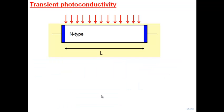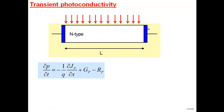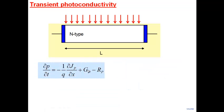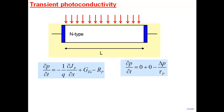After switching off the light, apply the continuity equation for transient photoconductivity: no current flowing (drift/diffusion term = 0), no generation (G_p = 0). The equation becomes: ∂(Δp)/∂t = −Δp/τ_p. Solution: Δp(t) = Δp₀ × exp(−t/τ_p). Excess holes decay exponentially with time constant τ_p, and so do excess electrons. Therefore the resistance also recovers exponentially.